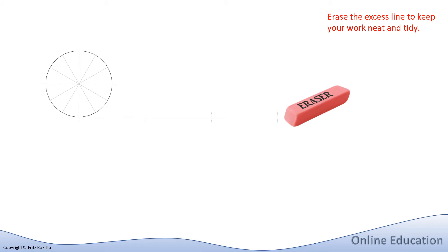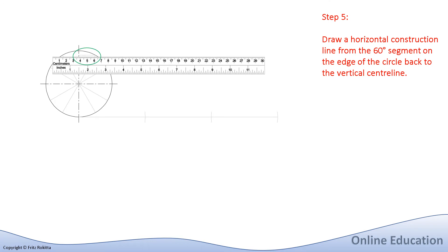As a good draftsman will do, we will now erase the excess lines after the third segment on the constructed baseline. With the next step, we need to be very careful. We are going to draw a perfectly horizontal construction line from the top right edge of the 60 degree construction line that intersects with the top right edge of our circle, and draw a light horizontal construction line from that intersection back to the vertical center line of our circle construction.